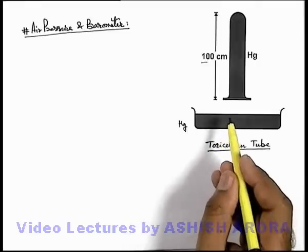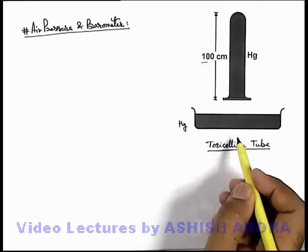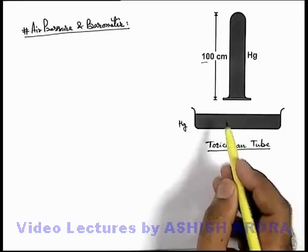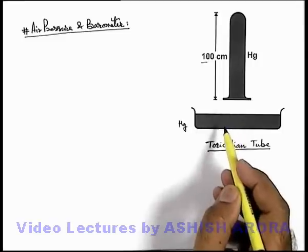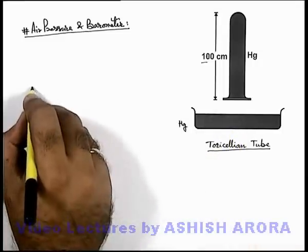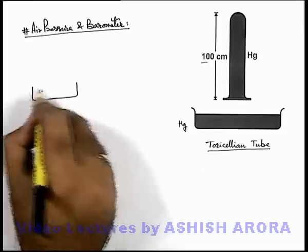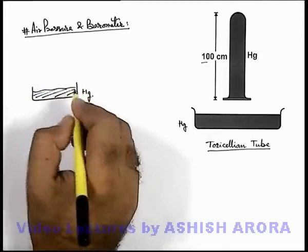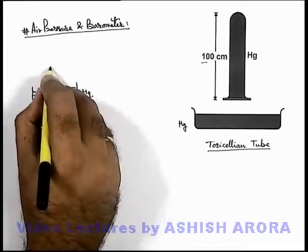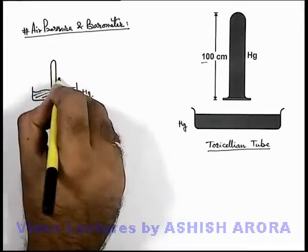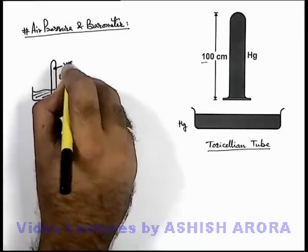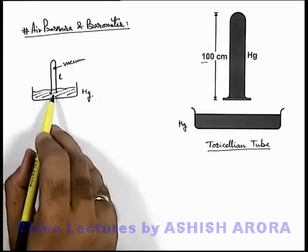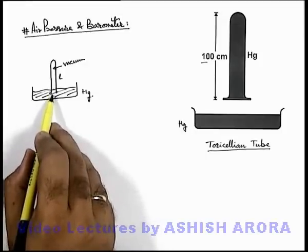To understand the concept of the Torricellian tube, you must understand what is the role of air pressure in maintaining the levels of mercury in a tube. For example, if we consider a jar in which mercury is filled, and a tube of length L which is having vacuum is inverted and opened — its mouth is opened when it is dipped into the mercury.